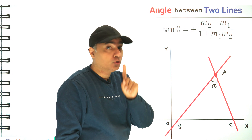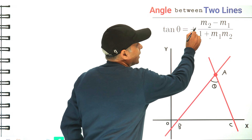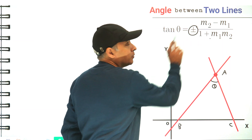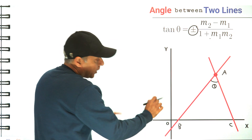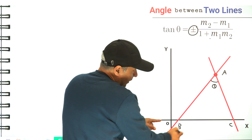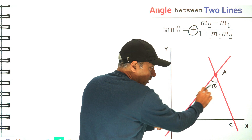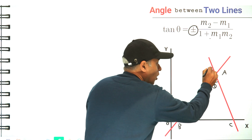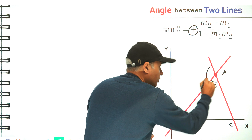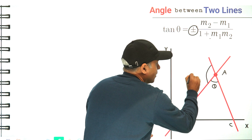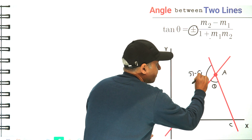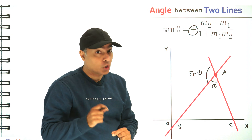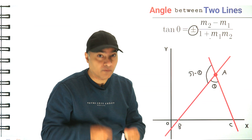An important thing to note is that there are two such values, so that's why it's written plus minus. These two lines make an angle theta with each other, but they also make another angle which is pi minus theta. Hence there are two values. So let's solve it now.